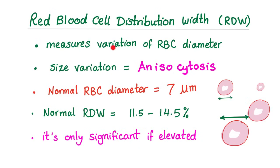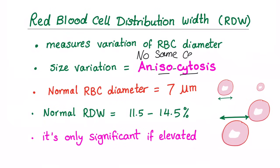RDW measures the variation of RBC diameter. Let's say we have a small RBC, an intermediate one, a big one, and a bigger one — there is a variation. When there is a size variation, we call it anisocytosis. Let's break that down: 'an' is a Greek word meaning 'no', 'iso' means the same, 'cytos' means cell, and 'osis' means condition. So anisocytosis is the condition of cells of different sizes.